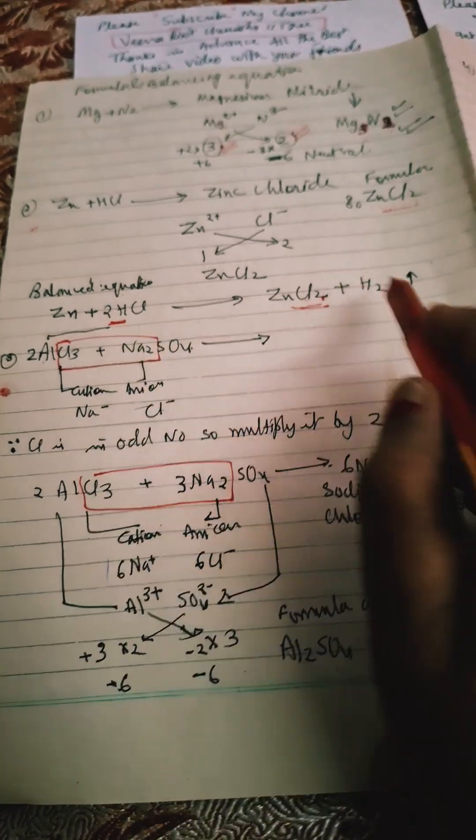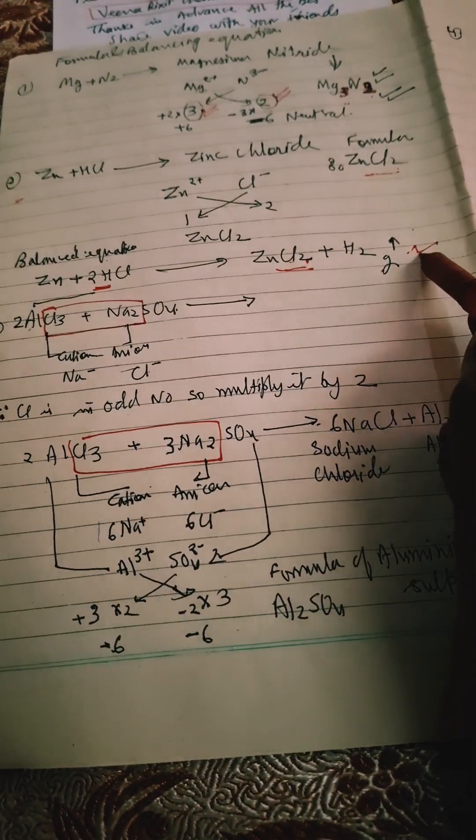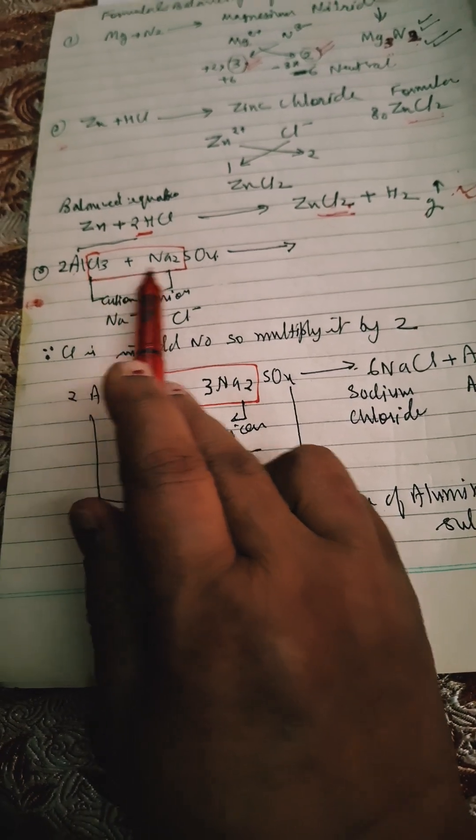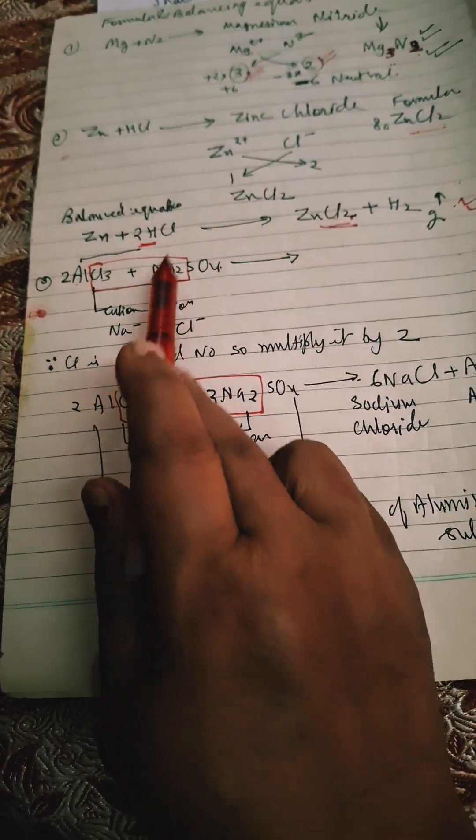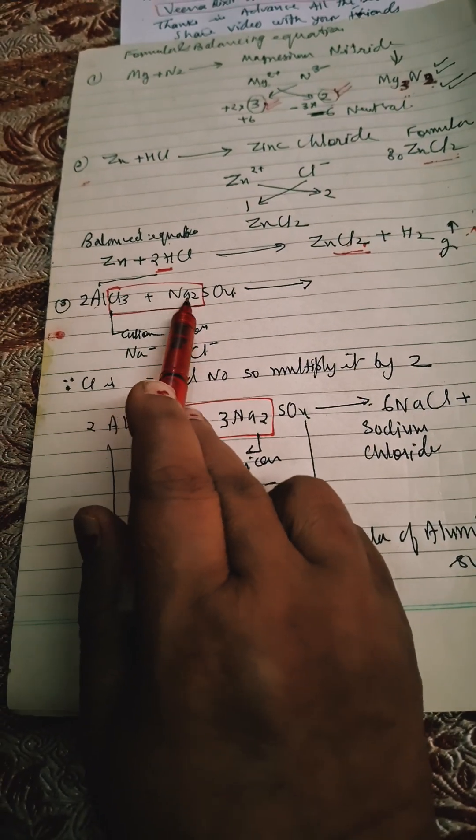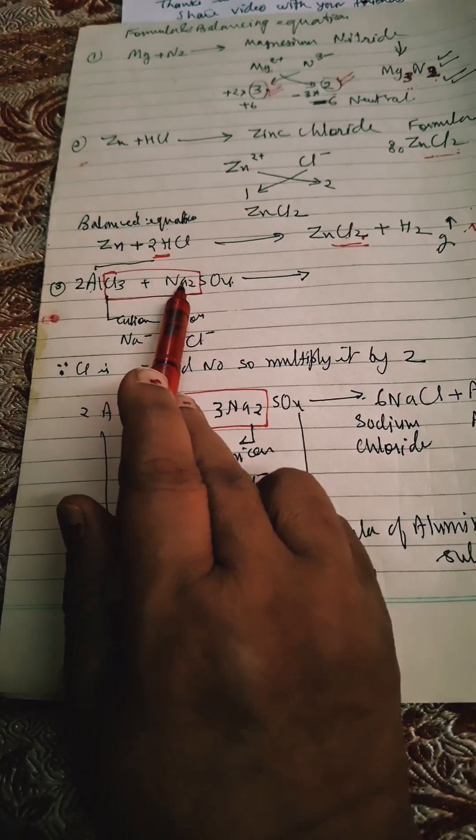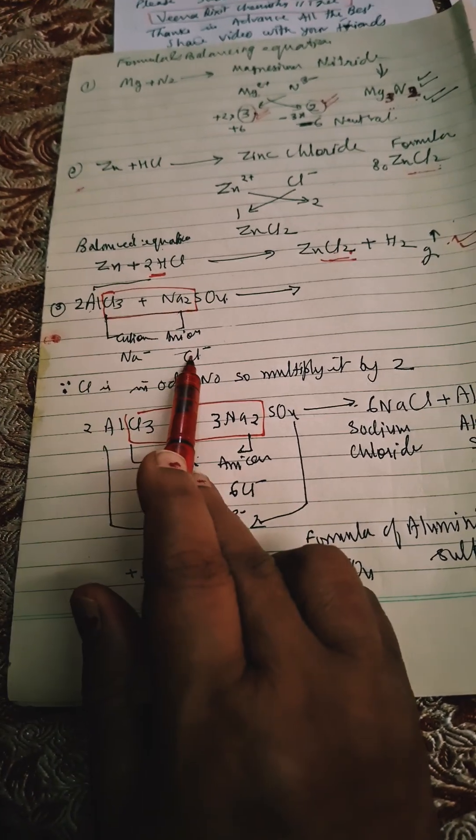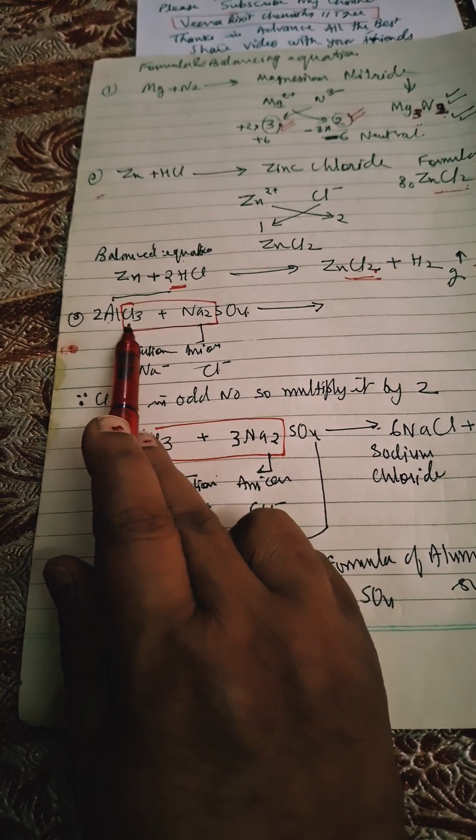Now AlCl₃ plus Na₂SO₄. We'll take in this, inner and inner, both side. I'm making a box: Na⁺ and Cl⁻. Both are like getting this - this is having positive 1, this is having negative 1. And now see here, Cl is 3.